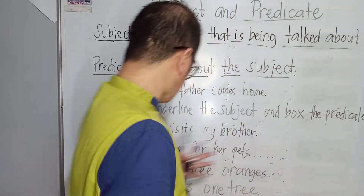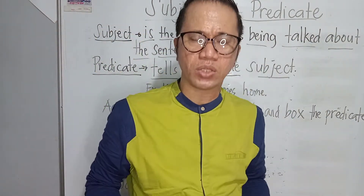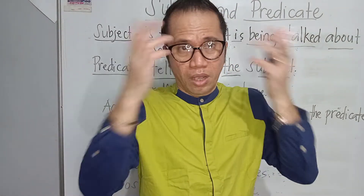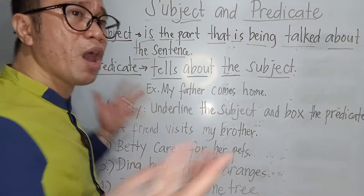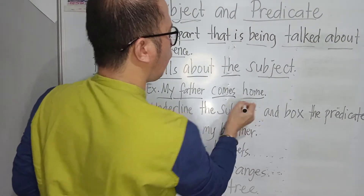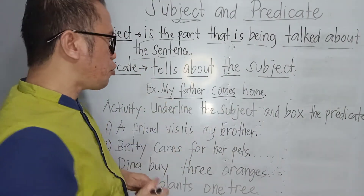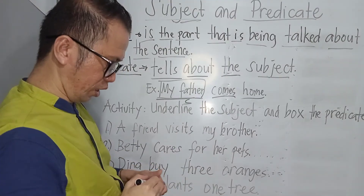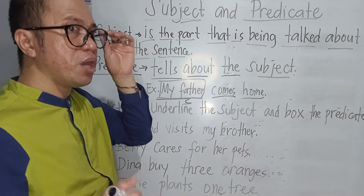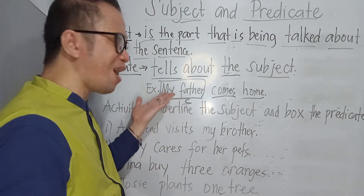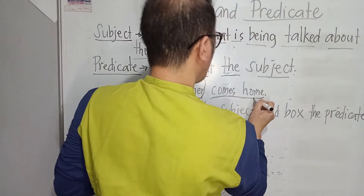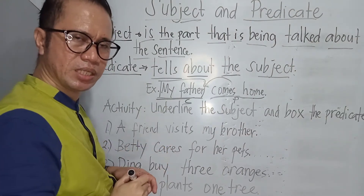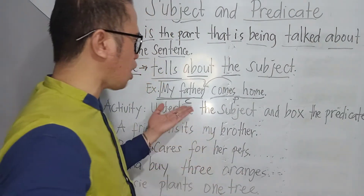I have created here four sentences, and I'm going to write up to ten sentences so that you, my dear viewers, can follow me. Here we go — number one, we have an example: 'My father comes home.' In this sentence, 'my father' is our subject because it is being talked about in the sentence. He is the one acted on. 'Comes home' is our predicate — it tells about what the subject does. That is the relationship between the subject and the predicate.